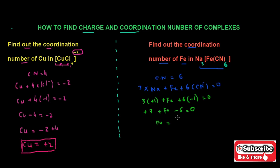Moving minus six to the other side gives plus six, and moving plus three to the other side gives minus three. After calculation we get plus three. This plus three is the charge on the central metal atom iron. I hope this video is helpful for you. Thanks for watching.